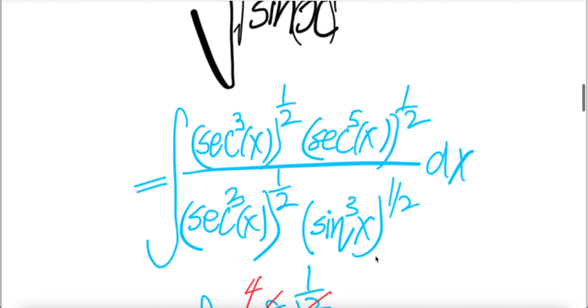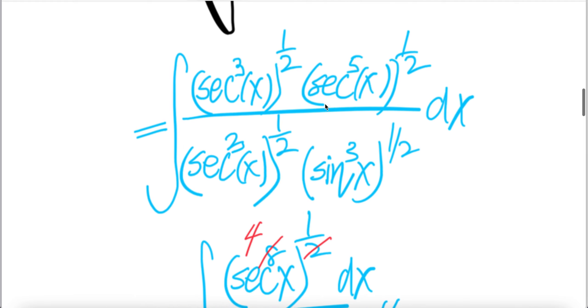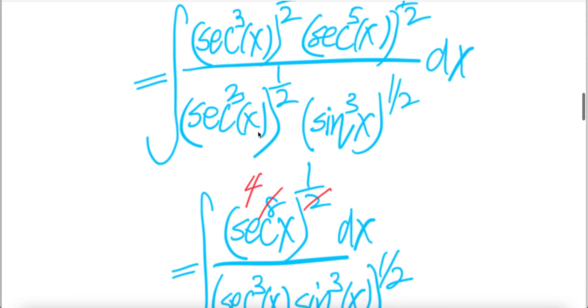Power of half means square root. Now let us combine this. The power is the same, so you can put power out here, and then you multiply sec cubed x times sec x to power 5, where you can add the exponent, which is 8. So we get sec x to power 8 to the power of half.